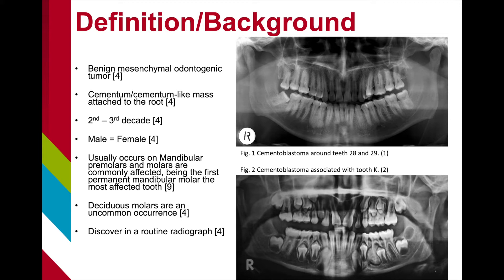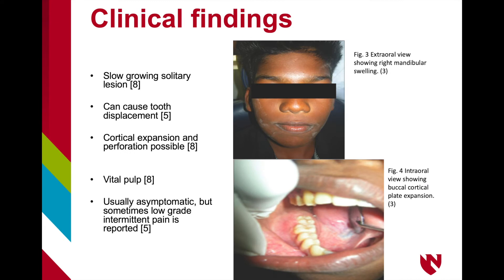While cementoblastoma can be associated with any root, it is commonly associated with the first permanent mandibular molar. It is uncommon that a cementoblastoma would occur on a deciduous molar. It is most often discovered in a routine radiograph. Figures 1 and 2 show classic examples of cementoblastomas in panoramic radiographs.